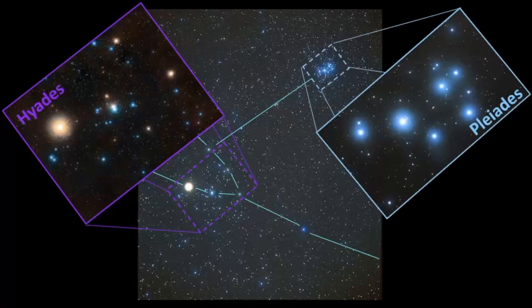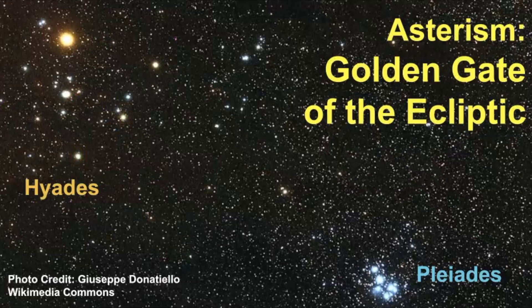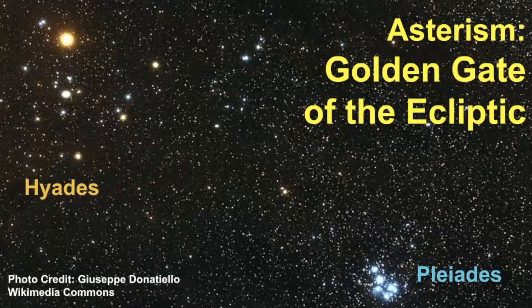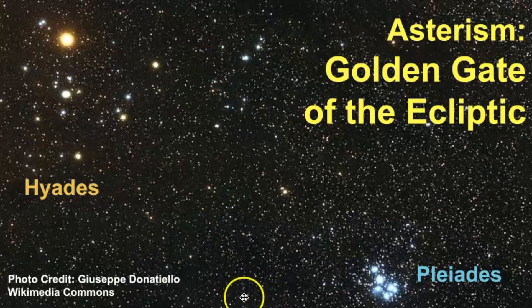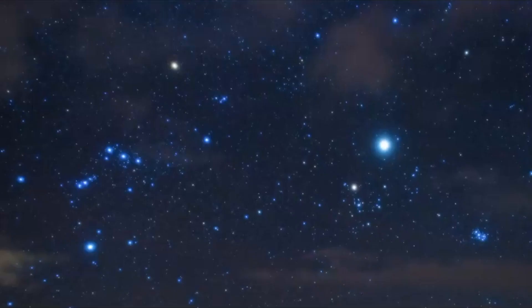So these two together make up the asterism known as the Golden Gate of the Ecliptic and this has been known for several thousands of years. It's a recent discovery of mine and really this was dubbed this name because all the planets as well as the Moon and Sun pass really closely along the line known as the ecliptic, and the ecliptic goes through here so that's how it got its name.